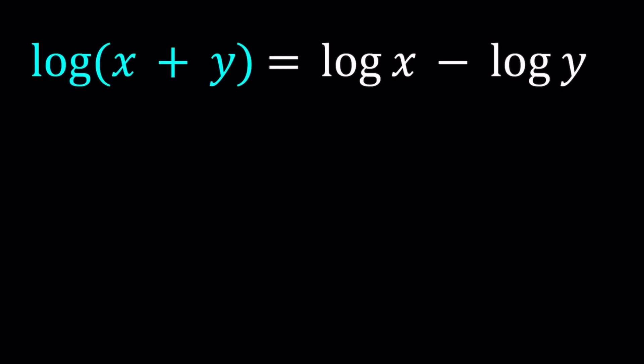So why don't we write it as 10 to the power log(x+y) equals 10 to the power log x minus log y. Obviously if two sides are equal, then 10 to the power of both sides are also going to be equal to each other, because 10^x as a function is always increasing, therefore it is a bijection.